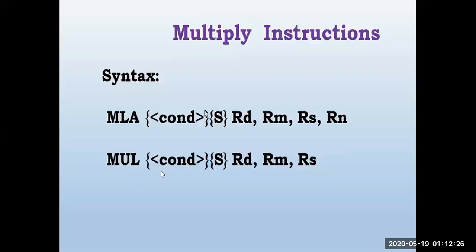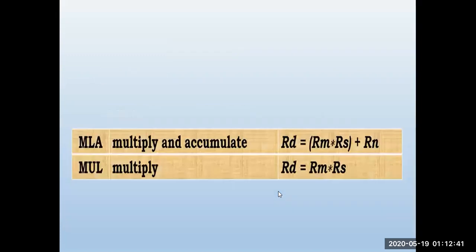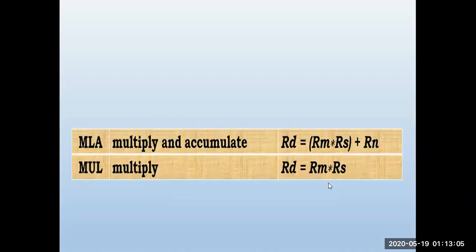The MUL (multiply) instruction has condition and S-bit fields similarly. If S is present it updates the flags in CPSR. MUL multiplies RM and RS and stores the result in RD. So MLA multiplies and adds with one more register, while MUL simply multiplies the content of two registers and stores the result in the destination register.